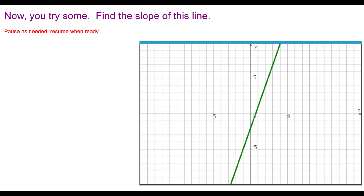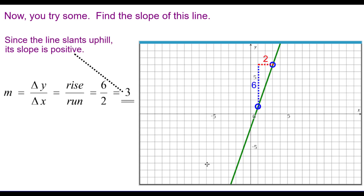Find the slope of this line. This line slants uphill, so it's positive. The rise is 6 and the run is 2. 6 divided by 2 is 3, so the slope is 3 over 1, or just positive 3.